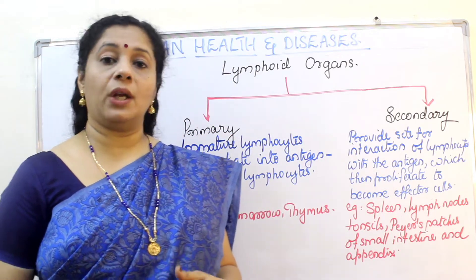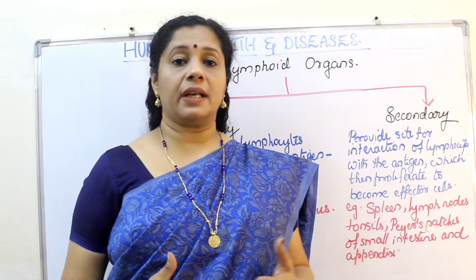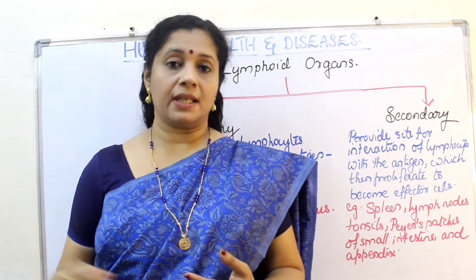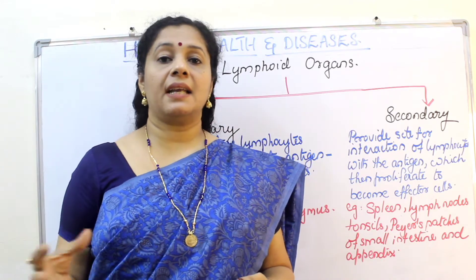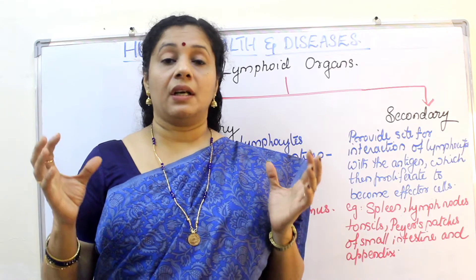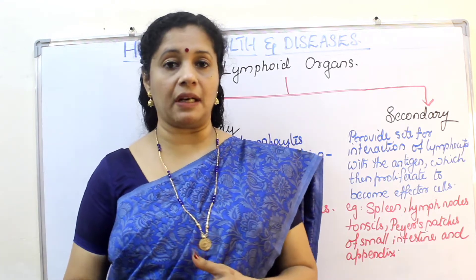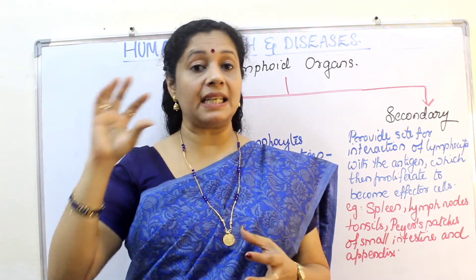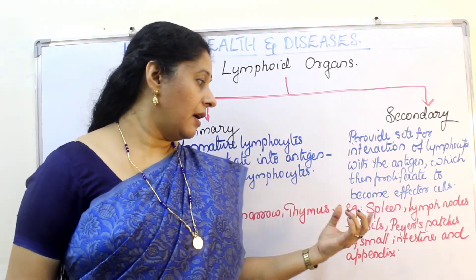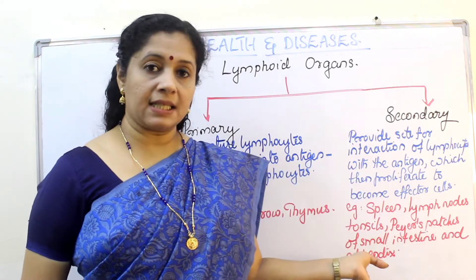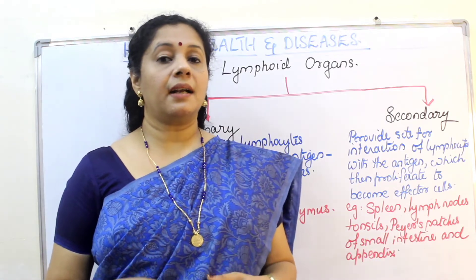Once training is finished, recruited candidates are deployed to different regions where their service is required — important areas where they may have to fight enemies. Similarly, trained lymphocytes move to secondary lymphoid organs. Secondary lymphoid organs are many in our body: for example, spleen, lymph nodes, tonsils, Peyer's patches of the small intestine, and appendix.